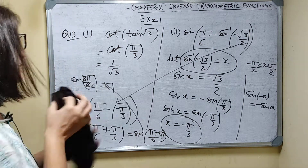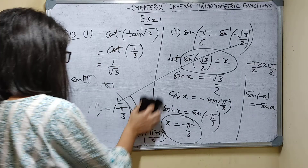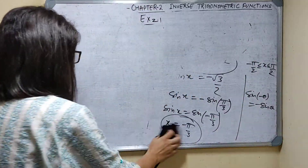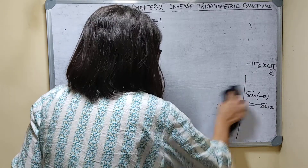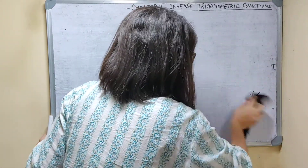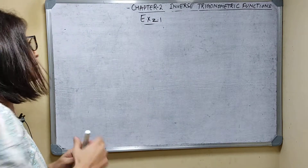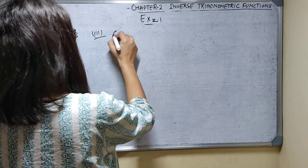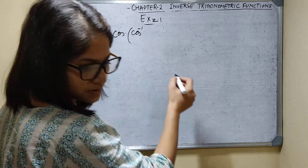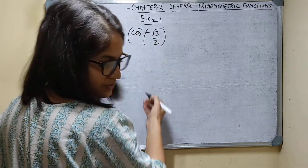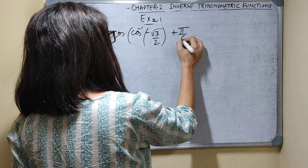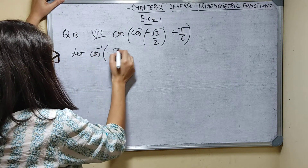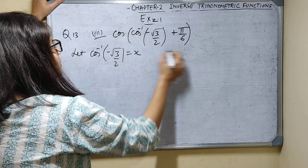Now question number 13, third part: cos of (cos inverse of minus root 3 by 2 plus pi by 6). Let cos inverse of minus root 3 by 2 equal x. And x value lies between 0 to pi since it is cos inverse.